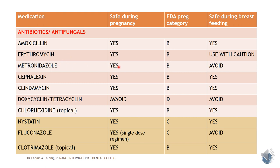Metronidazole is safe during pregnancy but should be avoided during breastfeeding — very important to understand this, as metronidazole can be expressed in breast milk and reach the baby. Cephalexin, a cephalosporin, is safe. Clindamycin is also considered safe. Tetracycline or doxycycline is completely to be avoided both during pregnancy and breastfeeding. Chlorhexidine is a topical antimicrobial and is safe to use during both pregnancy and breastfeeding.